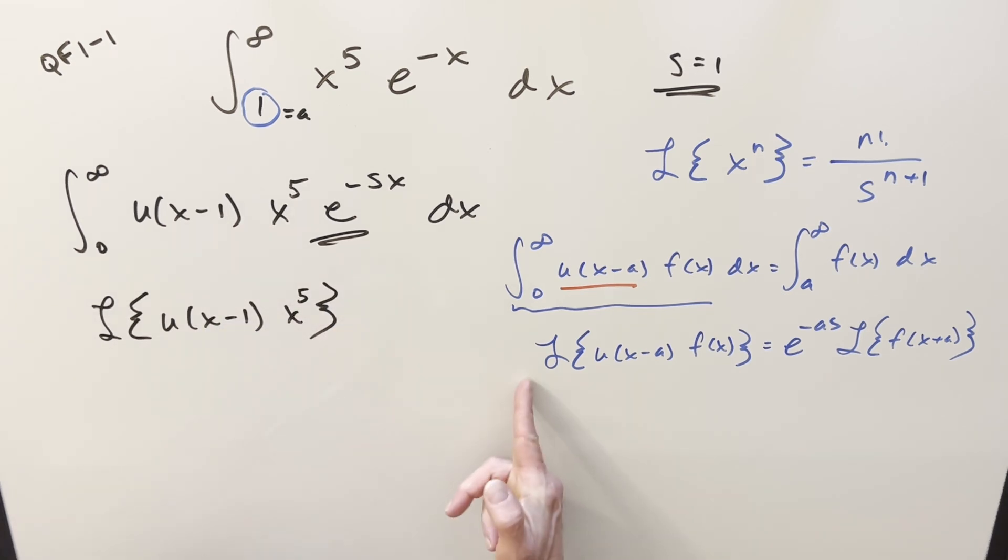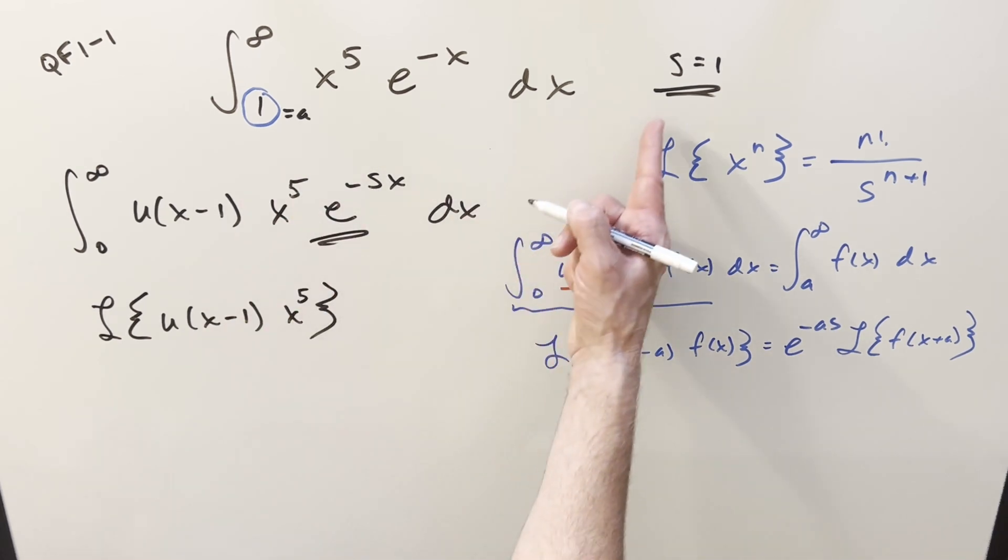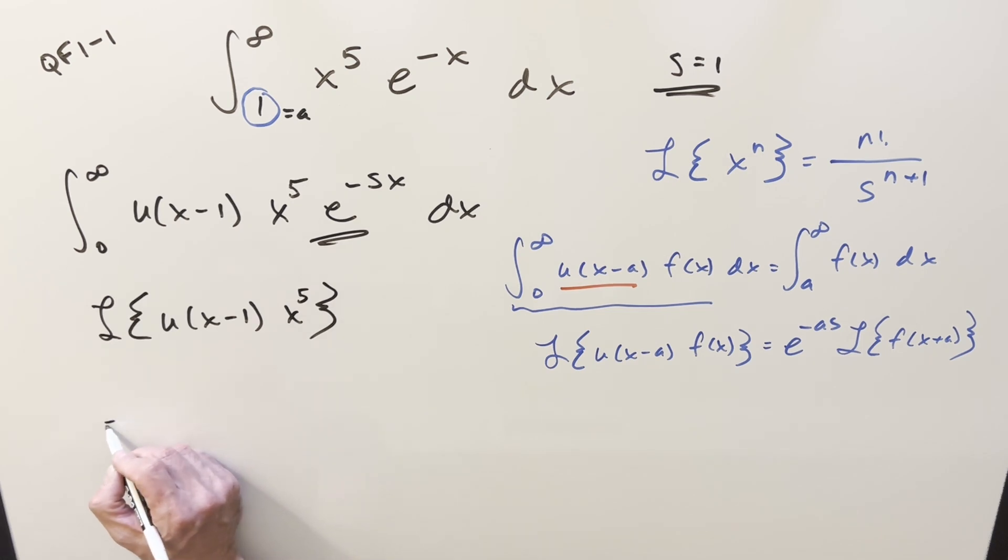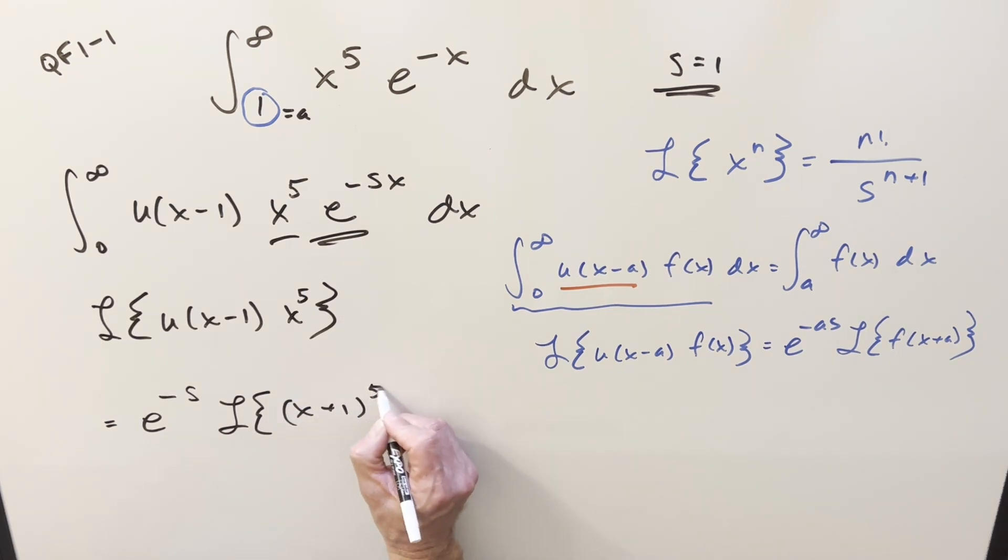And so now we have it in this form here, we can go to our formula, where the a value on it, our a value is 1, our s value for later is 1. So what's going to happen, we're going to have e, for the a we'll just plug in the 1, for the s we'll leave it for now. So I'll just leave this as e to the minus s, and then we'll plug in for s at the end. And then for the other part, we're going to want the Laplace transform of our shifted function now, shifting this by 1, this becomes x plus 1 to the 5th.